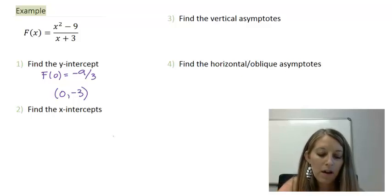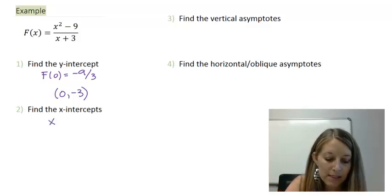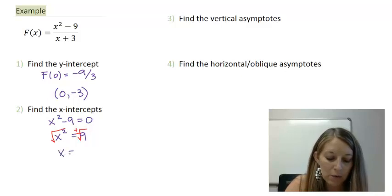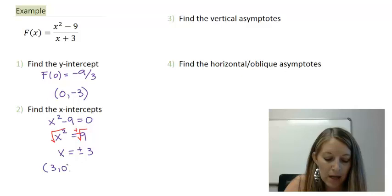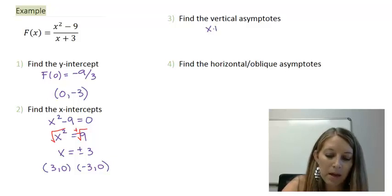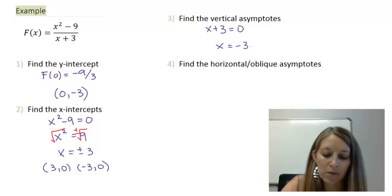Finding the x-intercepts, I set my numerator equal to zero. Moving the 9 to the other side and taking the square root of both sides forces a positive and a negative. So x = ±3, giving intercepts at (3, 0) and (-3, 0). For vertical asymptotes, I set the denominator equal to zero: x + 3 = 0 gives x = -3.